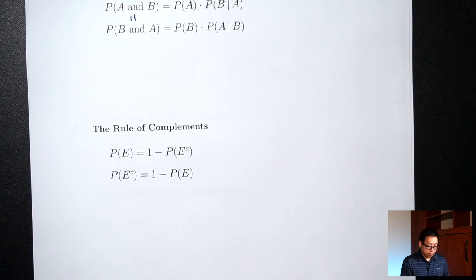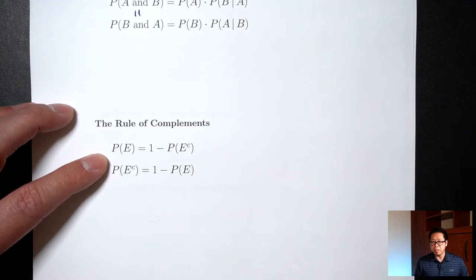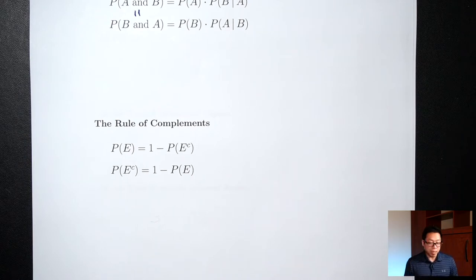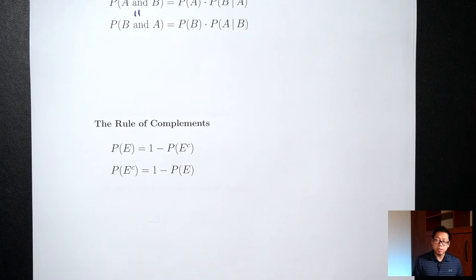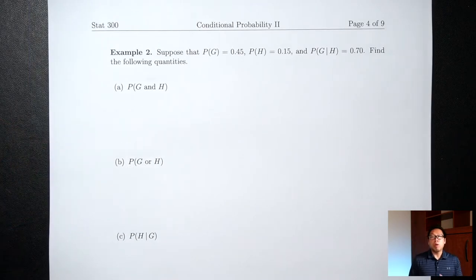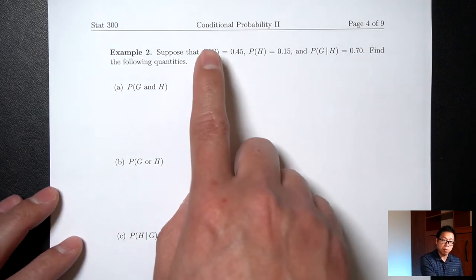The last set of formulas is called the rule of complements. If E represents 'it rains today,' the complement — just add the word 'not' — means 'it does not rain today.' These two formulas say: if you know one of them, do one minus it and you'll get the other. We use these formulas when we're not given a table, just the probabilities directly.